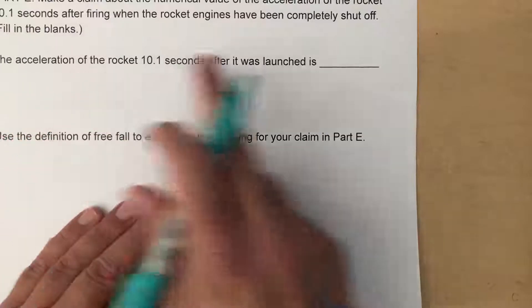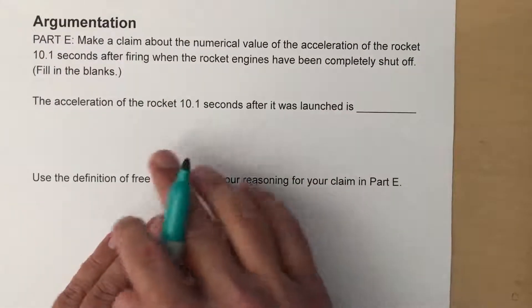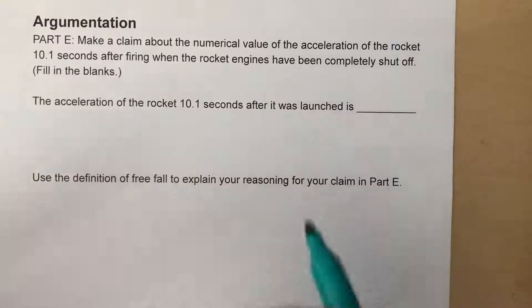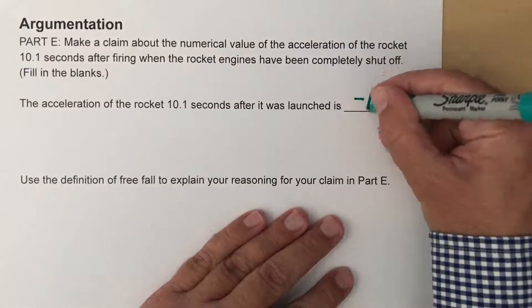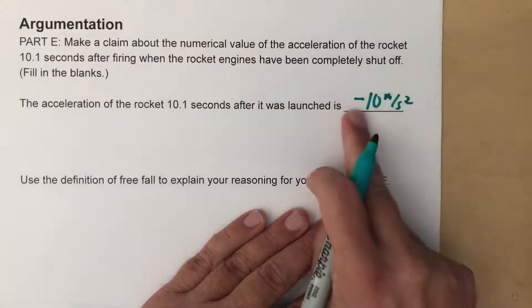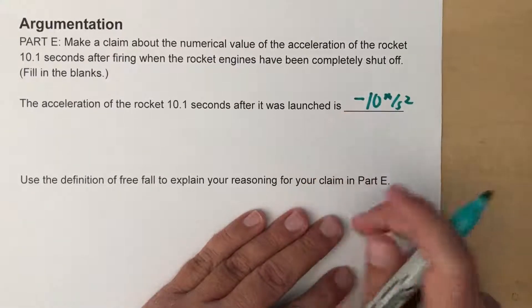The moment that we shut the engines off we're going to just be free falling. That's going to be the only force on it. So instantly our acceleration is going to be negative 10 meters per second squared, where the negative indicates downwards.